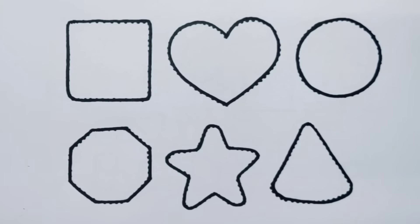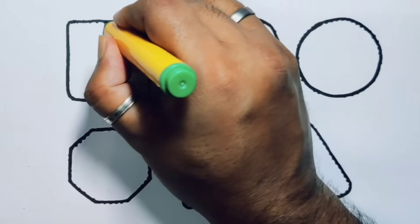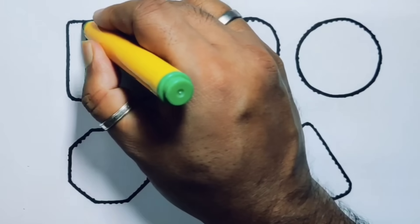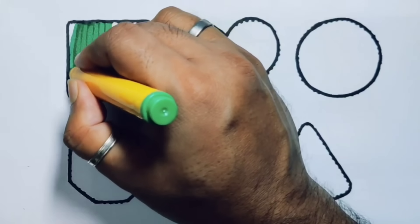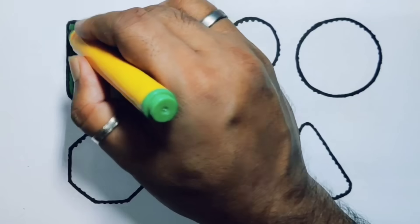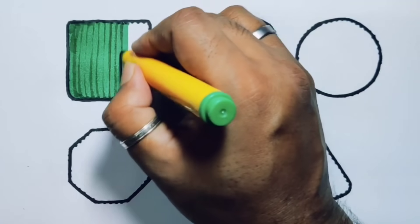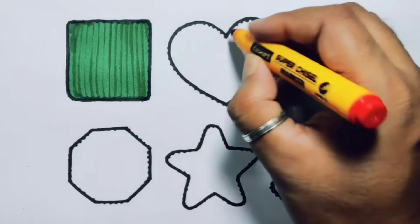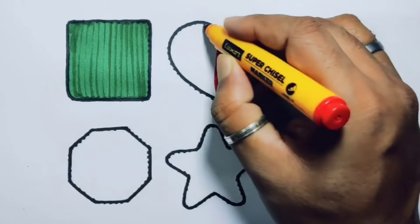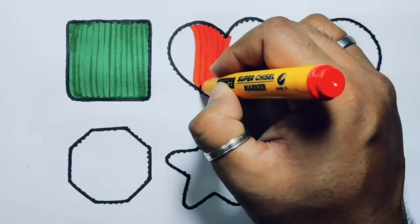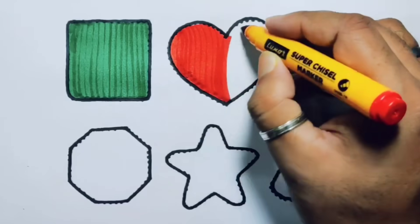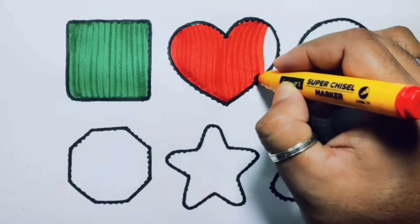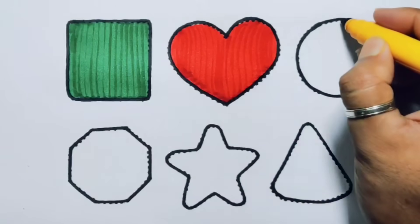Now we are going to put the color. Green color, square. Red color, heart. Chocolate color, circle.